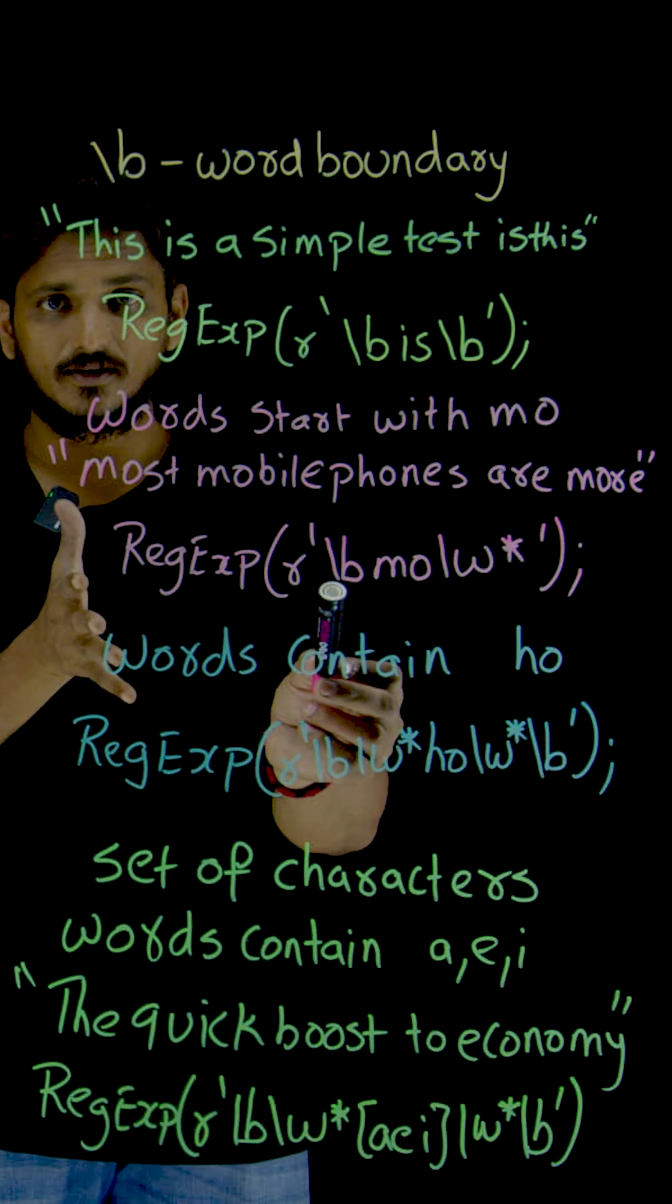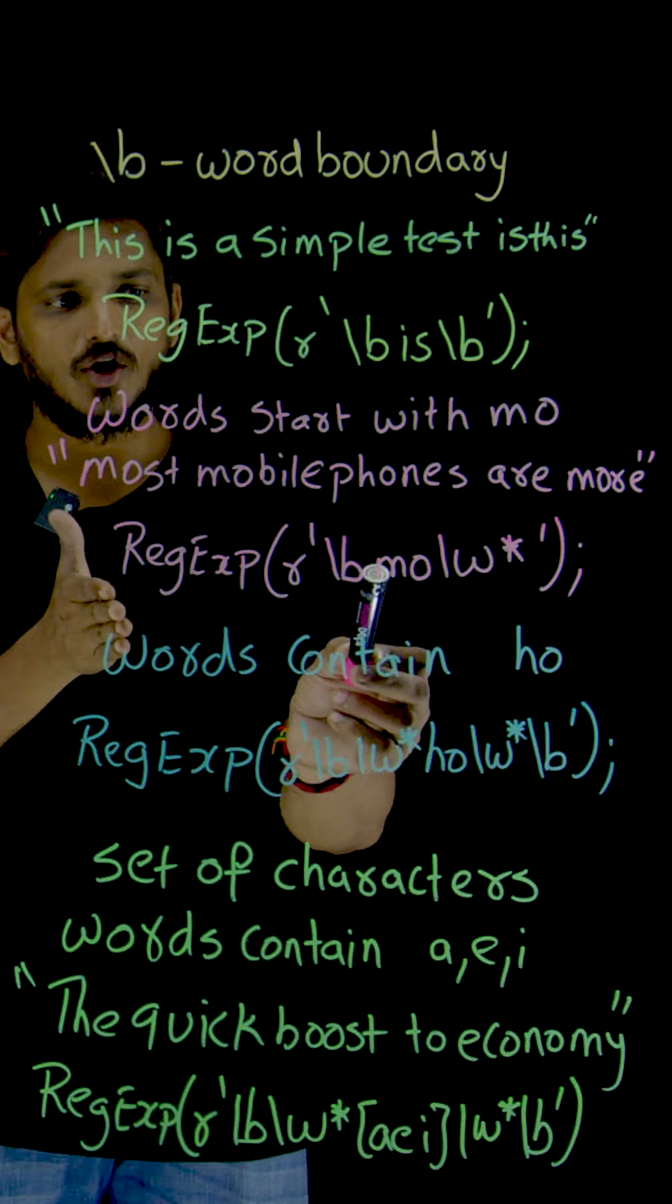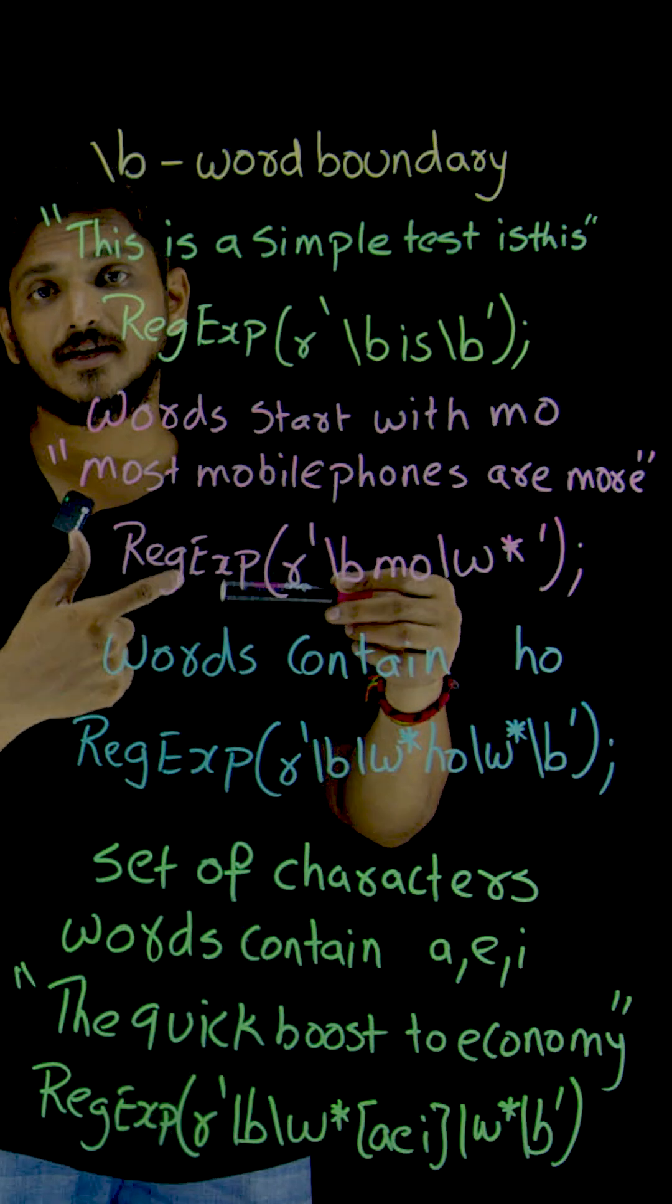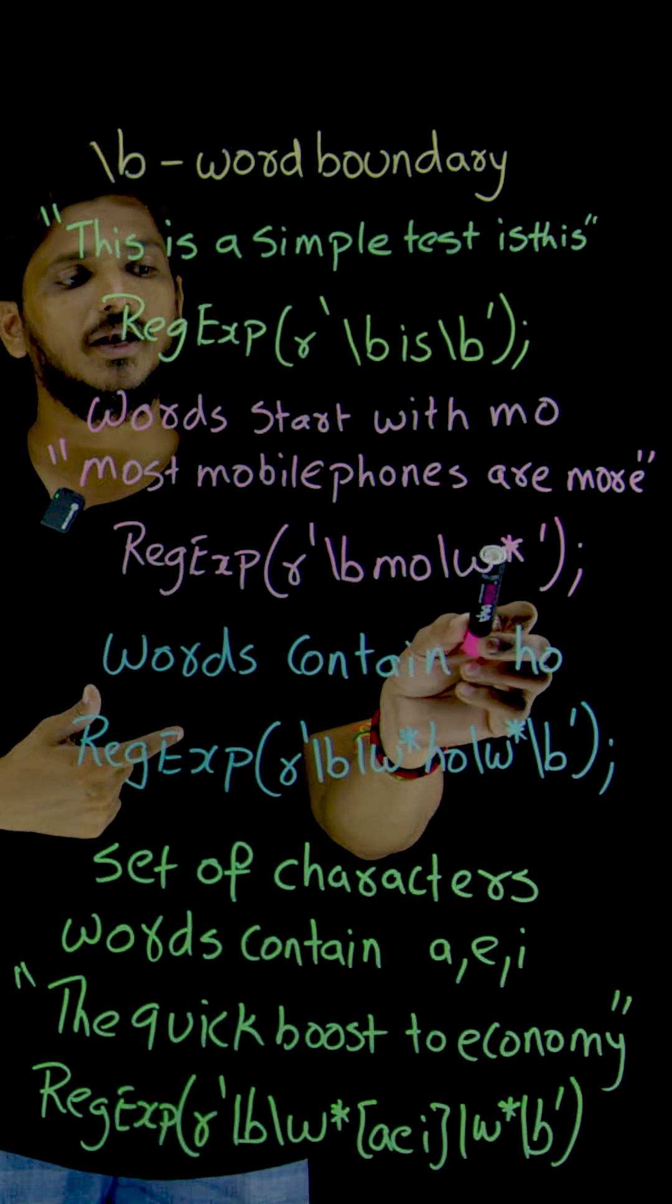slash b for the start of the word. Then you have to find M-O. After that, you can find any word character. Slash W star.